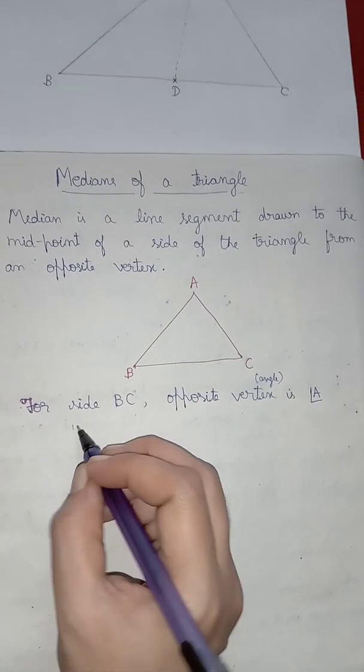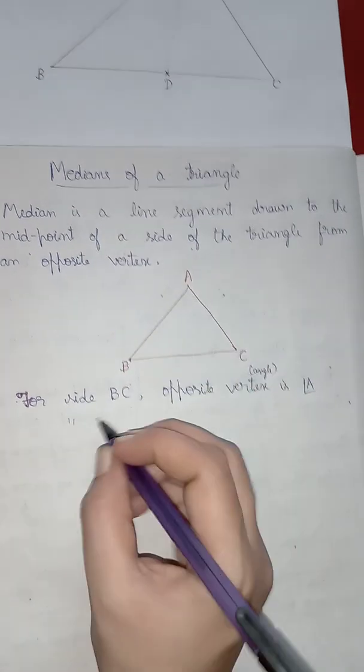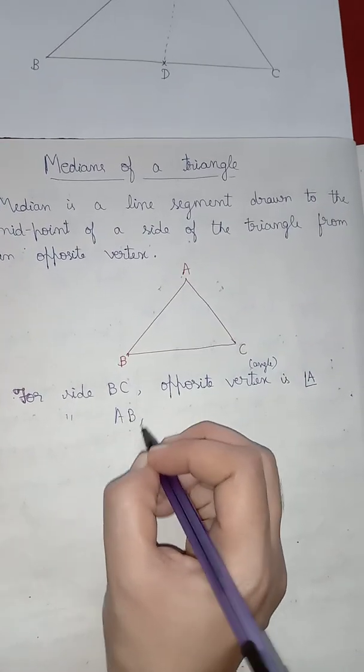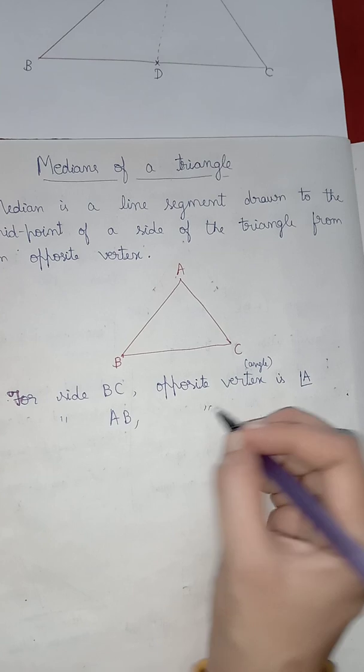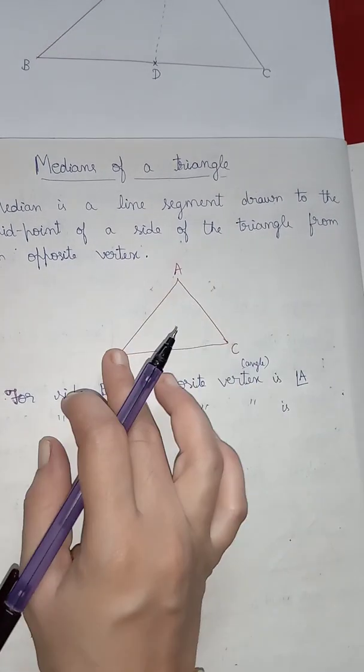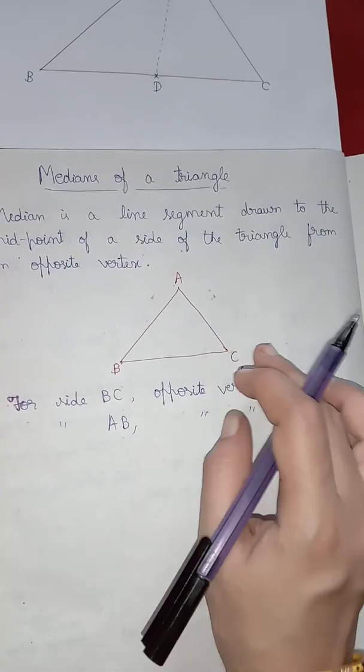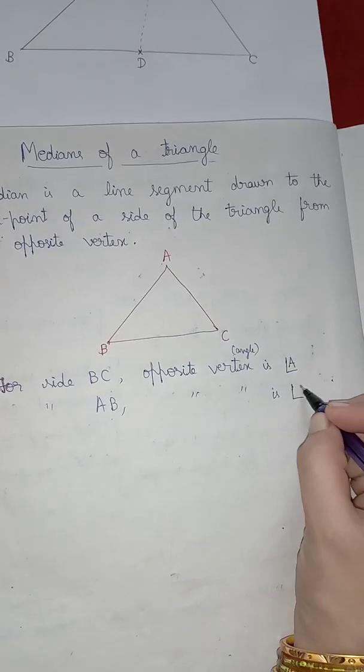Now, for side A, B, opposite vertex will be C. A, B you have. So, opposite vertex or opposite angle is angle C.